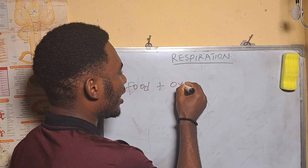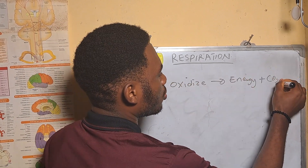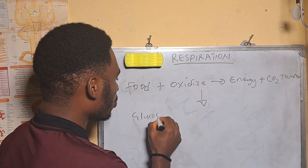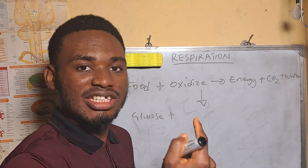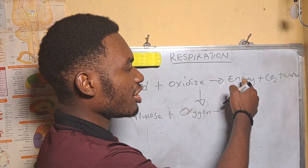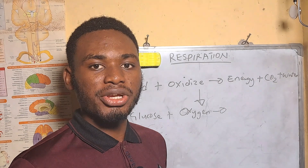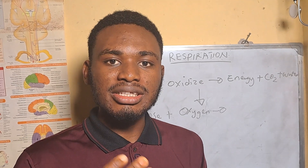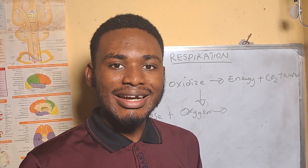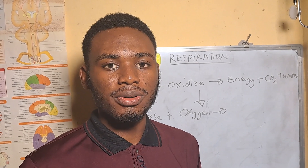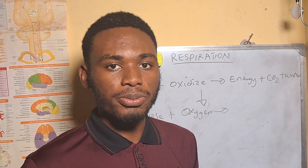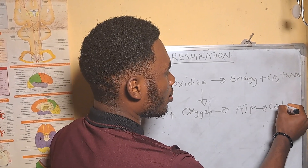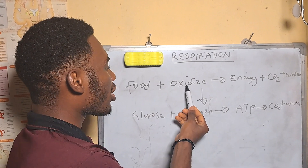So what happens in respiration is: food gets oxidized to give us energy plus CO2 plus water. The reaction is: glucose plus oxygen gives us energy. The energy from respiration comes in the form of ATP, which stands for adenosine triphosphate. This is a nucleotide that is the energy currency of the cell — it supplies energy for body consumption. So our energy is in the form of ATP, then CO2 plus water.